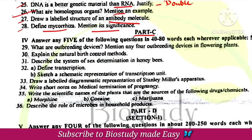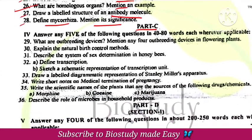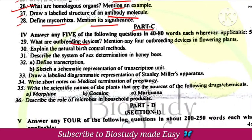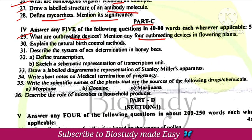Part C questions: outbreeding devices — list four outbreeding devices, easy question. Natural birth control methods include lactational amenorrhea, coitus interruptus, and periodic abstinence. Again, an easy direct question.